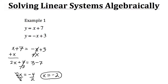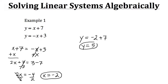Now we can plug x equals negative 2 into either equation in our system — it doesn't matter which one because they should give us the same y value. Let's plug it into equation 1. So we have y equals x, which is negative 2, plus 7. If we take negative 2 plus 7, we get a y value of 5.